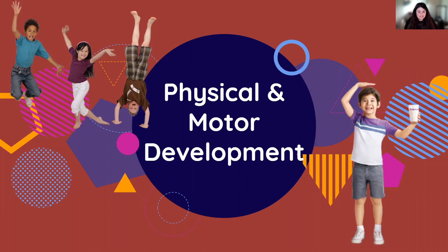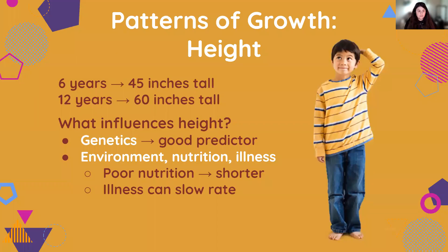In middle childhood, kids are obviously getting bigger, stronger, and they have more endurance. We're going to talk about the ways they're growing physically — body growth, motor development, and brain development. In terms of patterns of growth, let's look at height. At six years old, the average height is 45 inches tall, and at 12 years old the average is about 60 inches, or five feet tall. So there's pretty steady growth occurring during this period, with a growth spurt coming after in adolescence, but there is considerable growth occurring here.